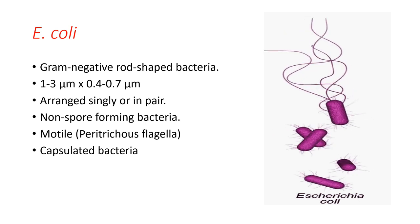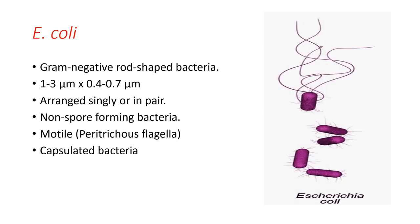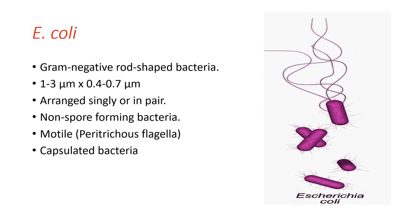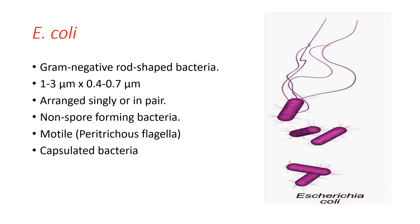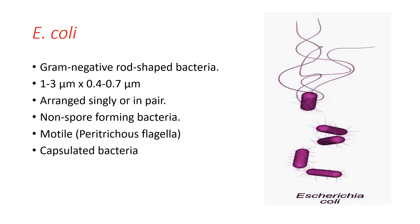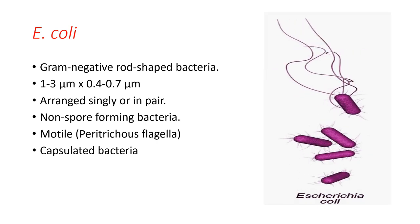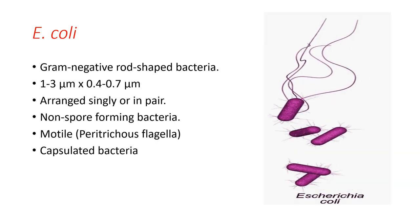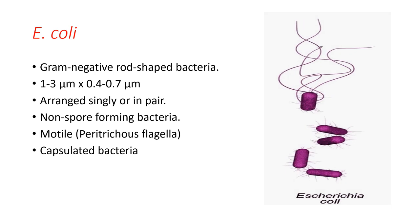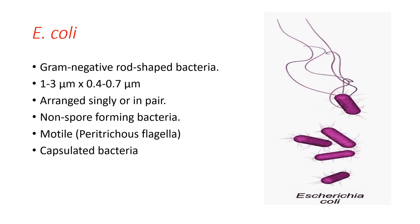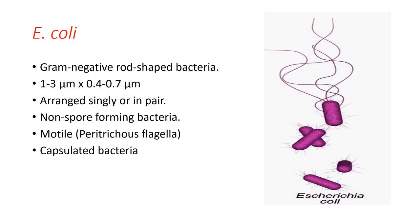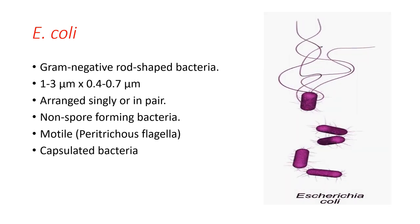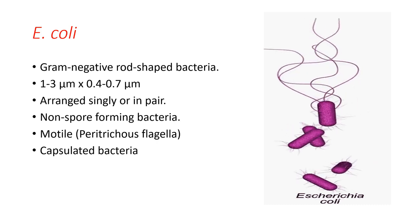The length of E. coli is 1 to 3 micrometers in length, and in diameter it is about 0.4 to 0.7 micrometers. Similarly, E. coli may exist singly or may be arranged in pairs.